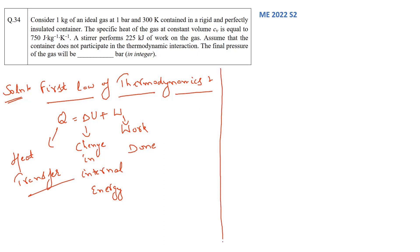In the question, examiner is saying consider 1 kg of an ideal gas at 1 bar and 300 Kelvin which is contained in a rigid and perfectly insulated container. The specific heat of the gas at constant volume CV has been given to us. A stirrer performs 225 kJ of work on the gas. Assume that the container does not participate in the thermodynamic interaction. We have to calculate the final pressure of the gas in bar.